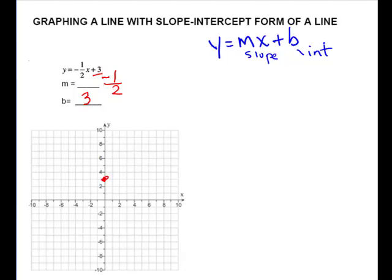From there, we will move with the slope. This is vertical over horizontal. So negative one says go down one from your point and over to the right two. Make a new point and then connect the points and beyond for your line.